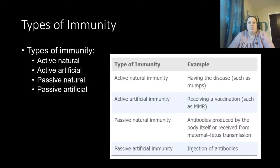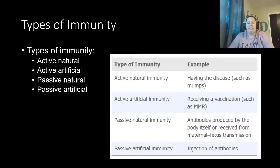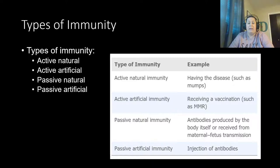There are several types of immunity. Active natural immunity means you've actually had the disease — your immune system actively made a response and now you have protection. For example, getting chickenpox in elementary school, fighting it, and now having antibodies against chickenpox. You were naturally exposed to it and actively fought it.